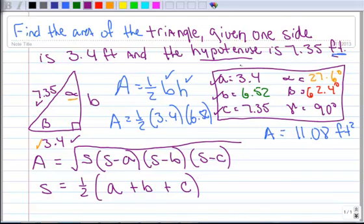So let's first find S. All right. So S is going to be one-half of 3.4 plus 6.52 plus 7.35. And when I do that,